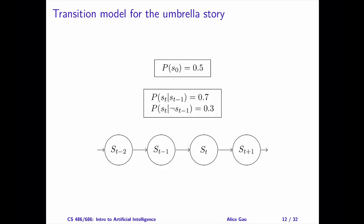This is a partial model for the umbrella story. The states form a first-order Markov chain. The transition model has a single conditional probability table for every time step. We also have a prior distribution for the state at time zero.